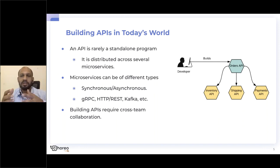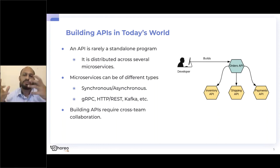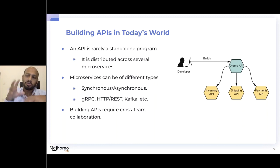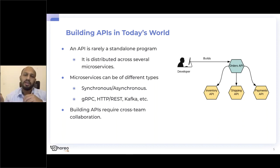If you're a developer given the responsibility of building this API, you'll know it has to do certain things: process the payment, update the inventory, handle shipping, and so on. In a microservices architecture, it's quite natural to separate these functions into their own respective microservices. An API today is never a standalone program — it's almost always a distributed application.